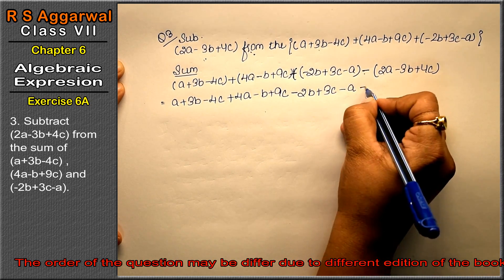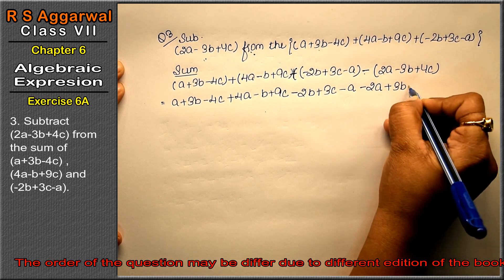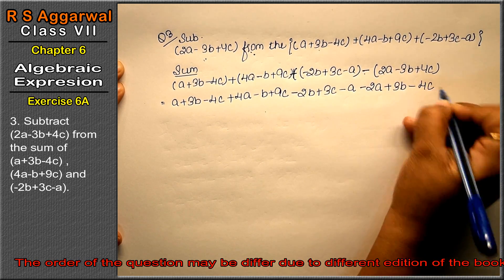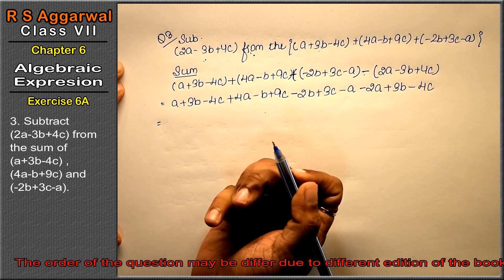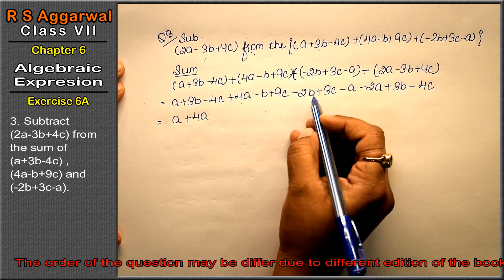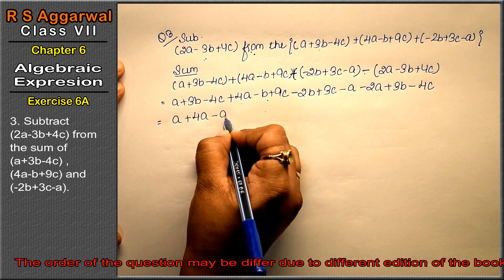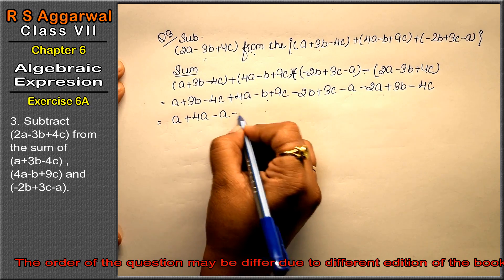Now the minus changes signs: minus 2a, minus becomes plus so plus 3b, minus plus minus 4c, right friends? Let's write the a terms together: a plus 4a minus a and minus 2a.